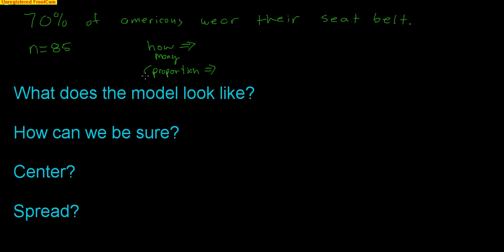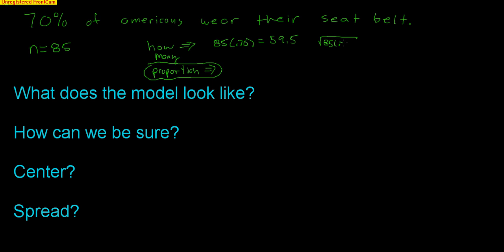We want to focus on the proportion part, but understanding how many is also pretty important. We know that if you have 85 people, you expect 70% of them to be wearing their seatbelt. So 85 times 0.7 is 59.5 — we expect 59.5 of them to be wearing their seatbelt. Of course that number could deviate, so there's a standard deviation: √(85 × 0.7 × 0.3) = 4.22.